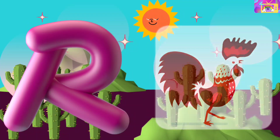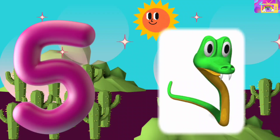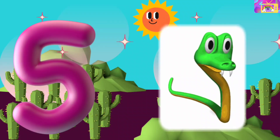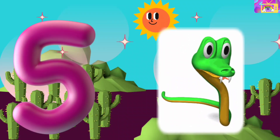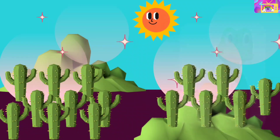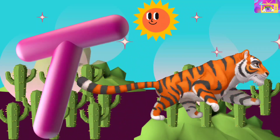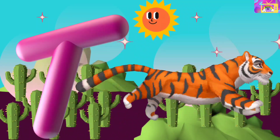Queen. R is for Rooster, R R Rooster. R Rooster. S is for Snake, S S Snake.